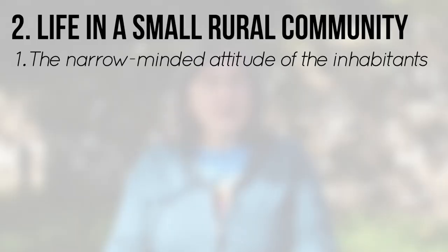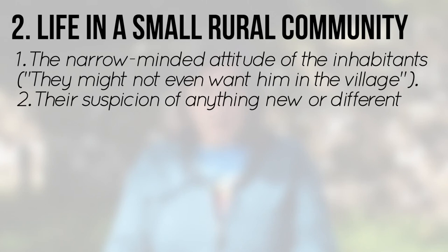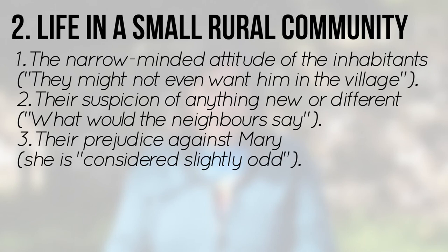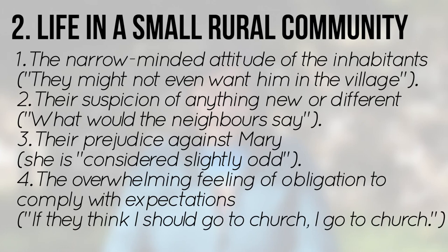As the story of The Red Door unfolds, several aspects of life in a small community are revealed and explored, and they are all negative. Firstly, the narrow-minded attitude of the inhabitants: 'They might not even want him in the village.' Secondly, their suspicion of anything new or different: 'What would the neighbours say?' Thirdly, their prejudice against Mary, who is considered slightly odd. And fourthly, the overwhelming feeling of obligation to comply with other residents' expectations, as demonstrated by: 'If they think I should go to church, I go to church.'